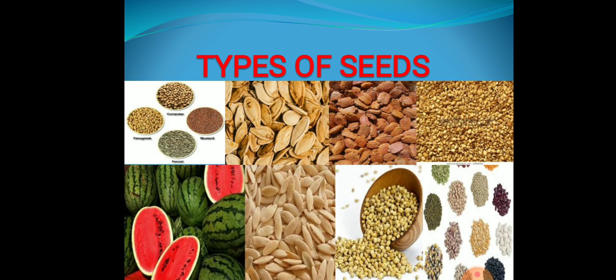Children, you have an activity. You have to collect some seeds — different types of seeds which are available in your house. Observe their shape, size, color and texture. Which is the smallest seed and which is the biggest seed? Make a list of all these seeds.